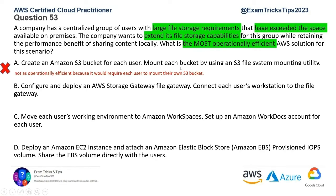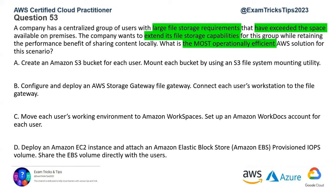Second option: configure and deploy AWS Storage Gateway. This is the service made for the exact use case we have here. If you want to extend your on-prem storage capacity, you need to use Storage Gateway. This is the service AWS created for exactly this scenario — extending on-prem storage capacity. It provides the best balance of performance and operational efficiency. The file gateway will cache frequently accessed data locally, improving performance for users. It's a fully managed service, so AWS handles provisioning and maintenance. This is the correct answer.